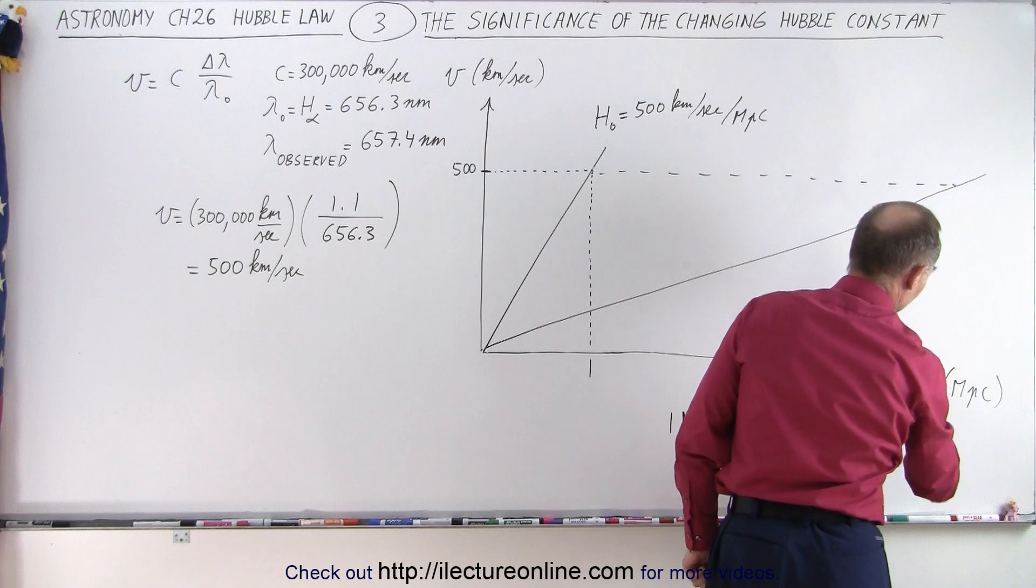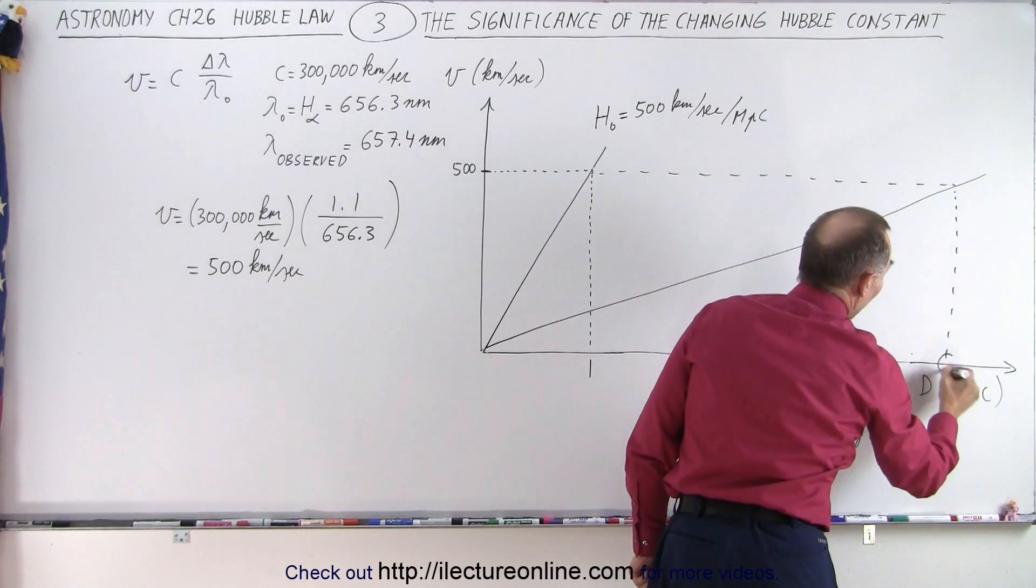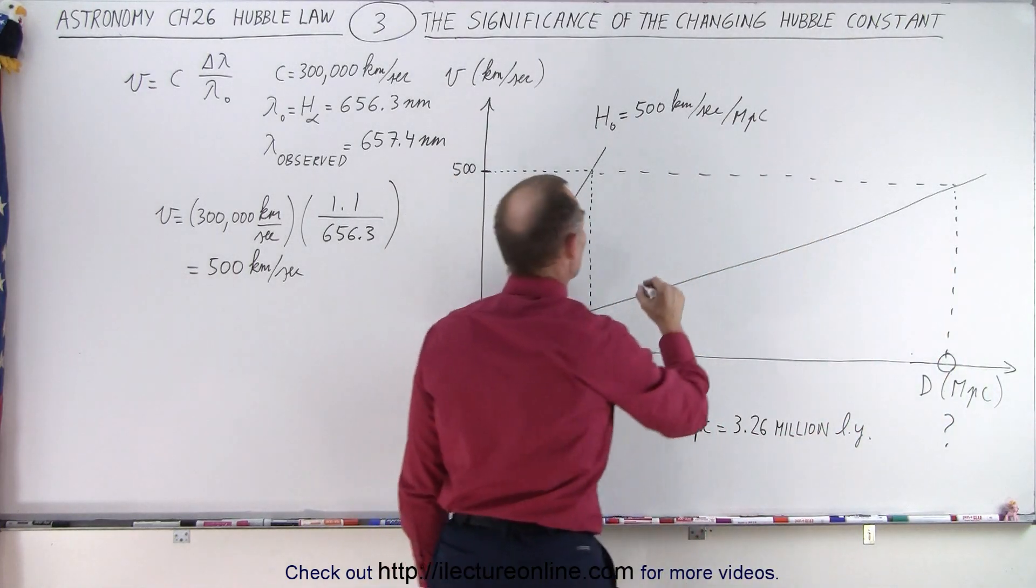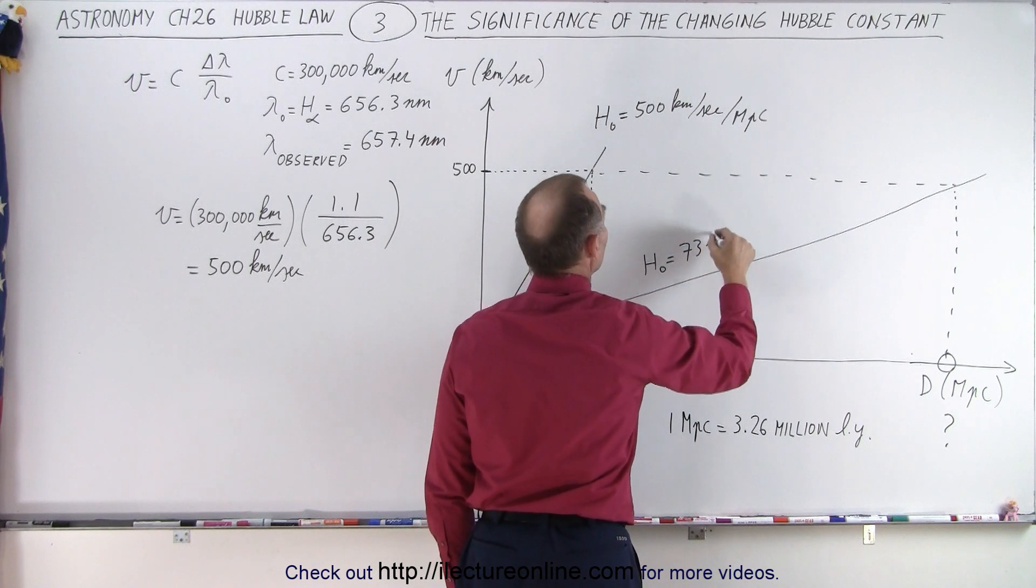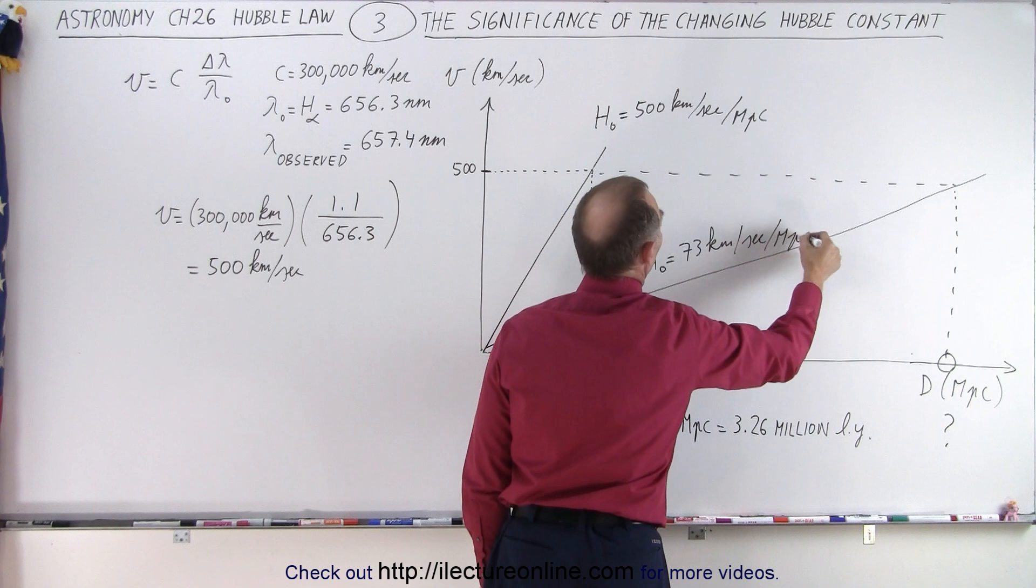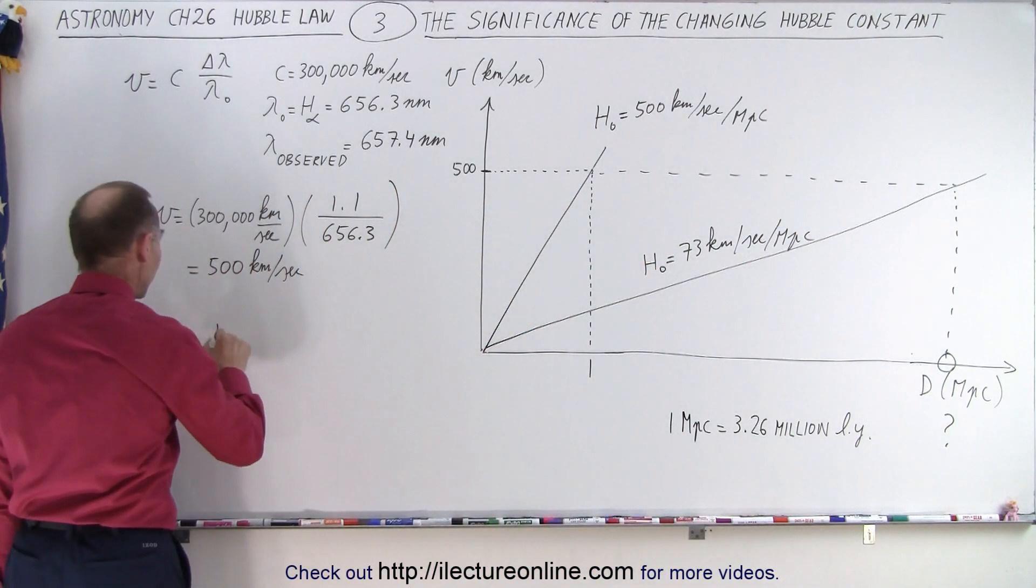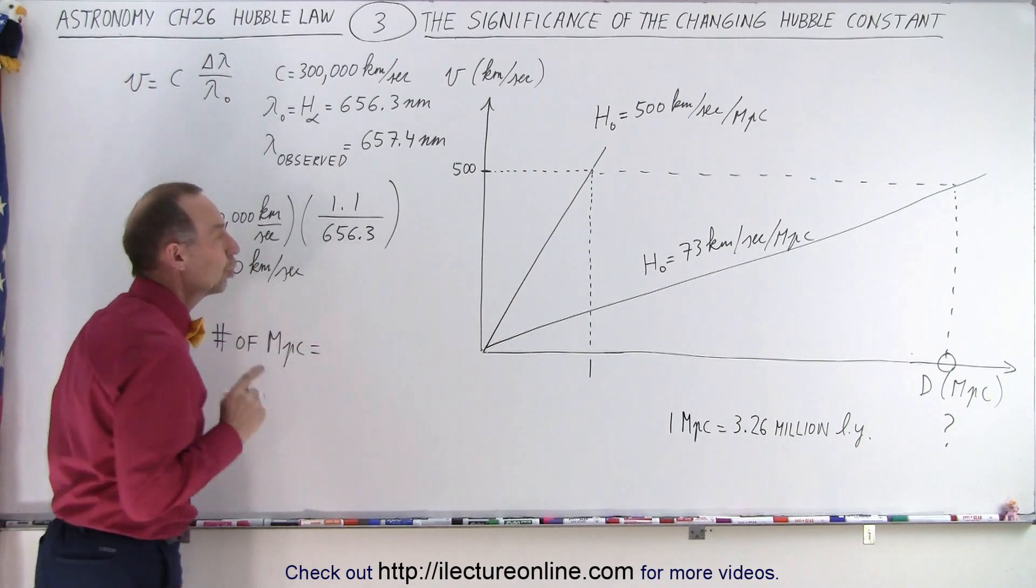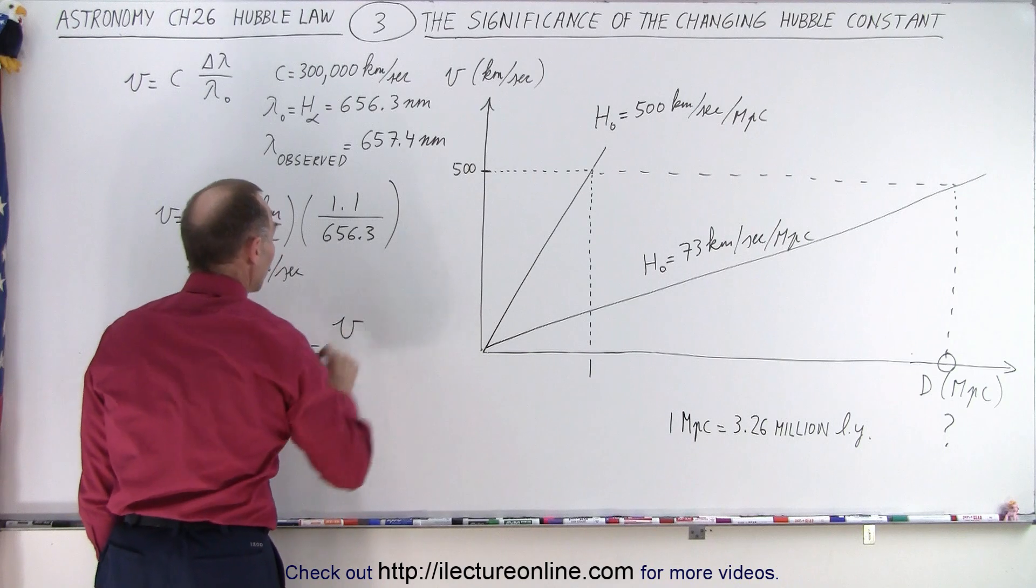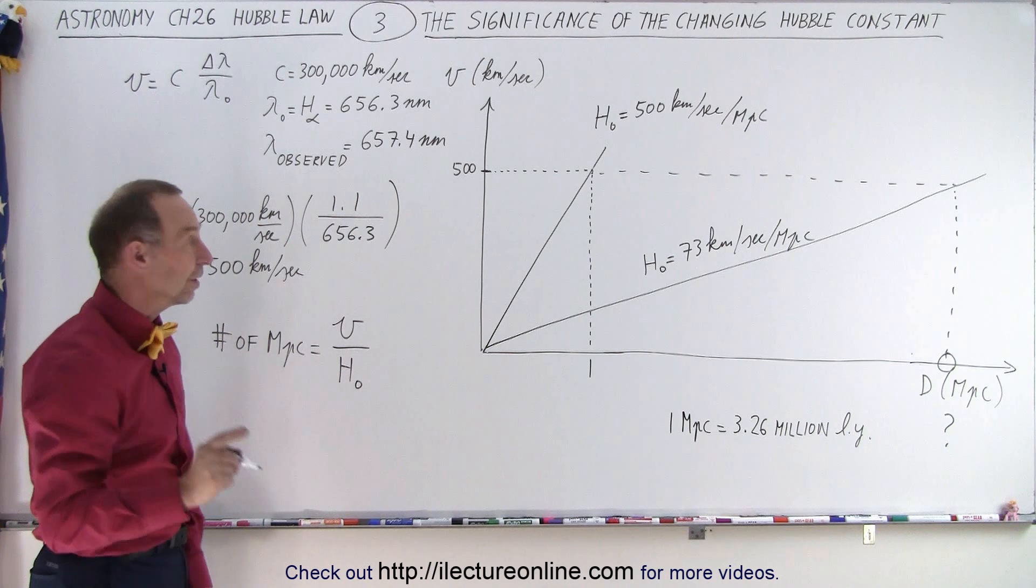So let's go over here until we hit this line right there. And of course, I need to make my arrow a little bit bigger. There we go, make my arrow bigger. And what would be the new distance if we now assume that H sub nought is equal to 73 kilometers per second per megaparsec.